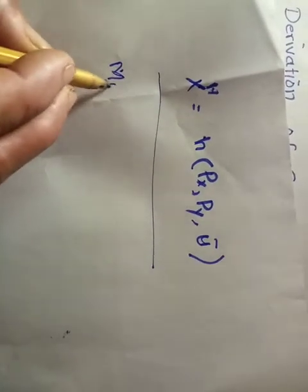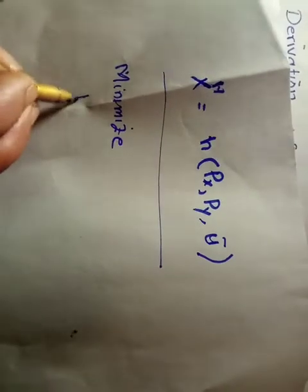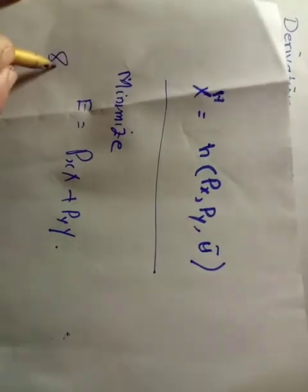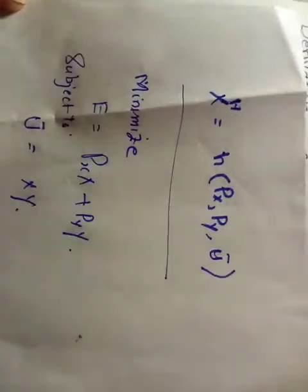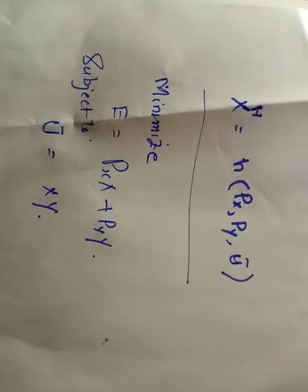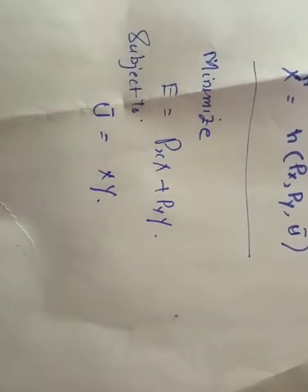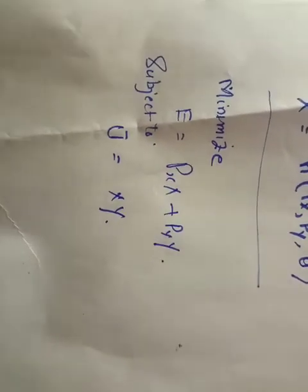There are two functions: one objective function and one constraint function. Our objective function is the expenditure function, which can be written as px·x plus py·y, subject to utility. Here we take a simple utility function — one may also take a Cobb-Douglas function or a limiting function.